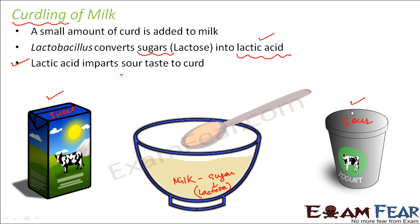That is why, for curdling to take place, it is extremely important to add a small amount of curd. If you do not add it, you are not adding the Lactobacillus bacteria, and without this bacteria the sugars will not get converted into acid, and milk will not turn into curd. At a suitable temperature, these Lactobacillus start to grow and multiply, causing more and more coagulation of proteins. The nutritional quality is also improved — for example, the content of vitamin B12 in curd is much more than that in milk.